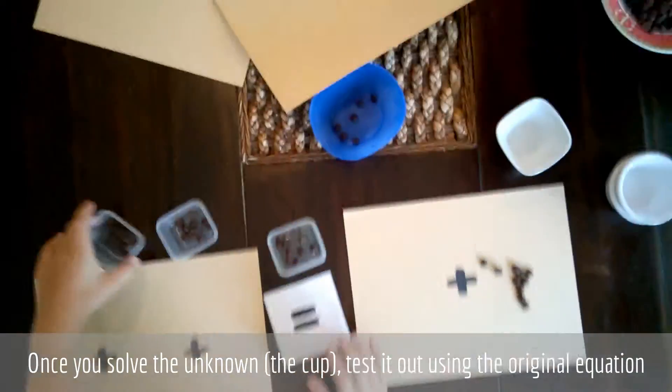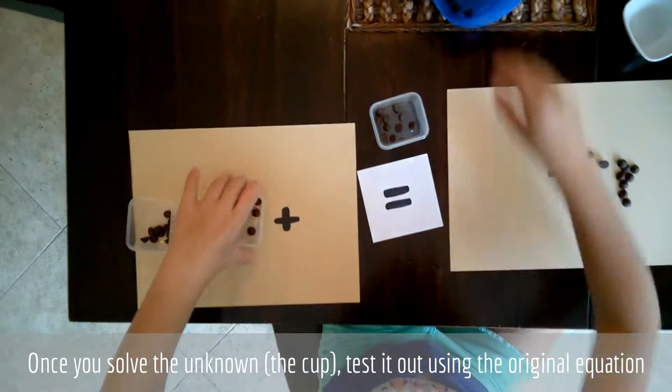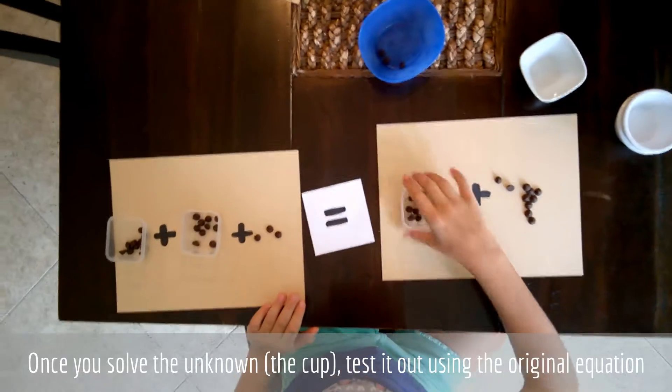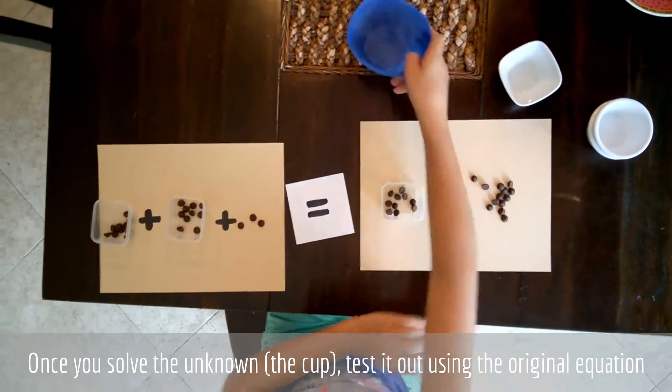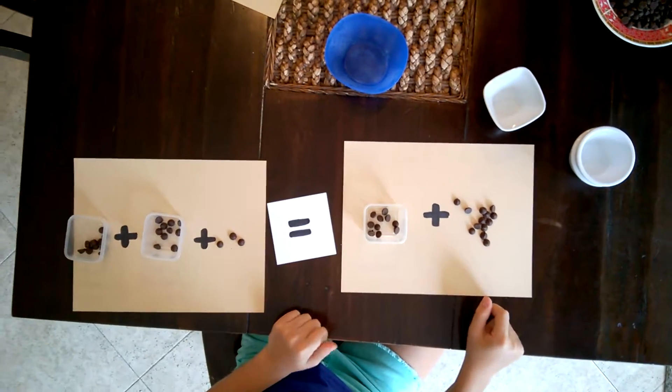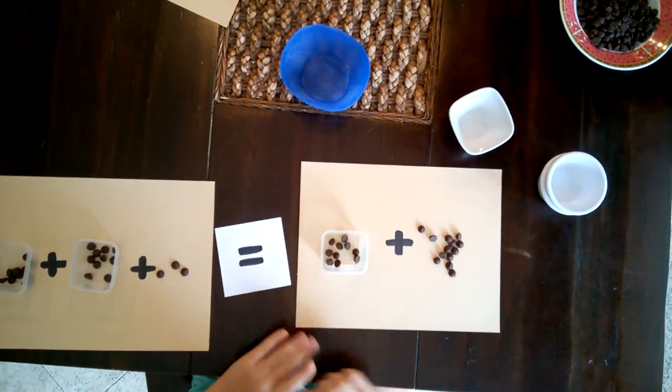Okay, so 10 plus 10 plus 3 equals 10 plus 13. So, 10 plus 10 is 20 plus 3 is 23. 10 plus 13 is 23.